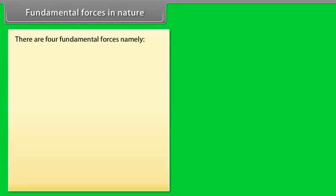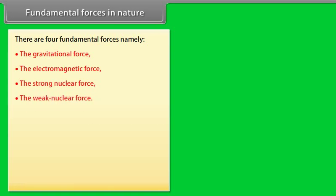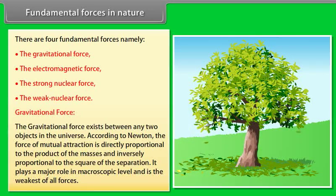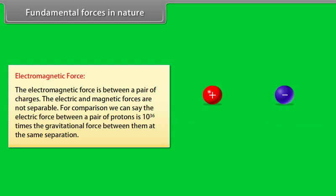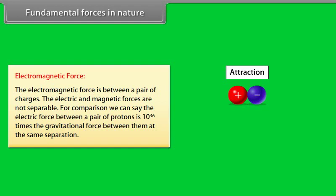Fundamental forces in nature. There are four fundamental forces namely the gravitational force, the electromagnetic force, the strong nuclear force, and the weak nuclear force. The gravitational force exists between any two objects in the universe. According to Newton, the force of mutual attraction is directly proportional to the product of the masses and inversely proportional to the square of the separation. It plays a major role in macroscopic level and is the weakest of all forces. The electromagnetic force is between a pair of charges. The electric and magnetic forces are not separable. For comparison, we can say the electric force between a pair of protons is 10 raised to the power 36 times the gravitational force between them at the same separation.